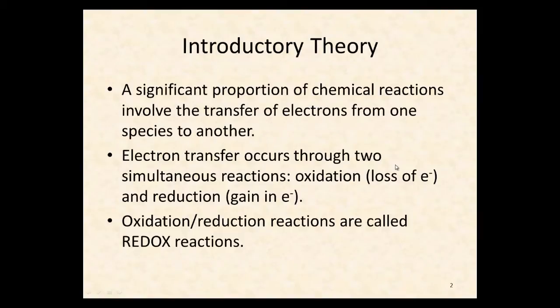So the introductory theory today, a significant proportion of chemical reactions involve the transfer of electrons from one species to another. In fact, it's the movement of electrons that makes chemistry occur. Electron transfer occurs through two simultaneous reactions. We call one of them oxidation, and that is where electrons are lost, and the other is reduction where electrons are gained.